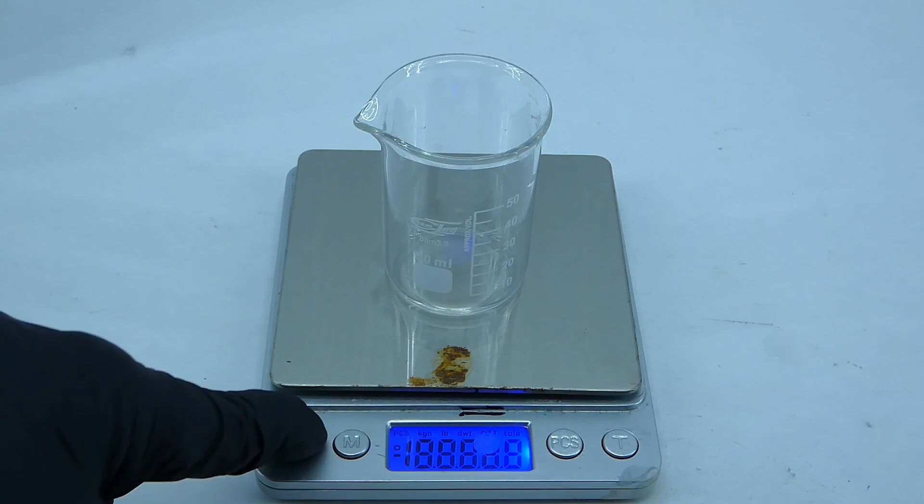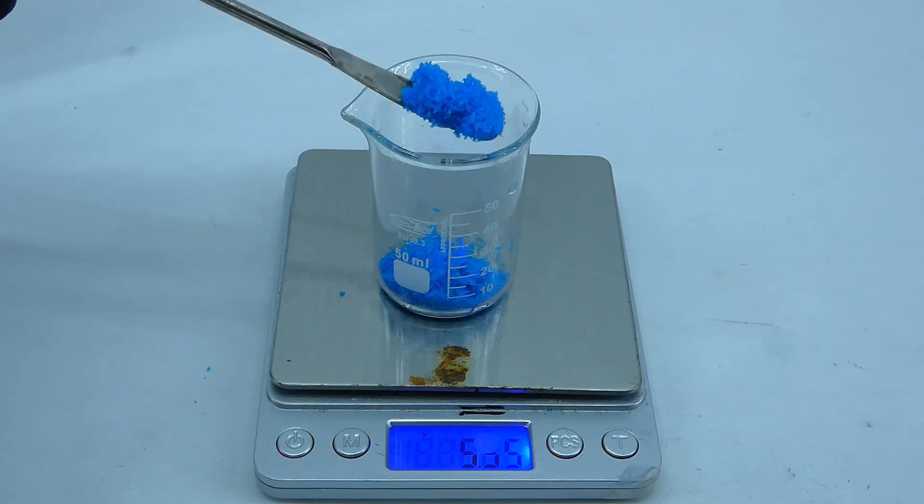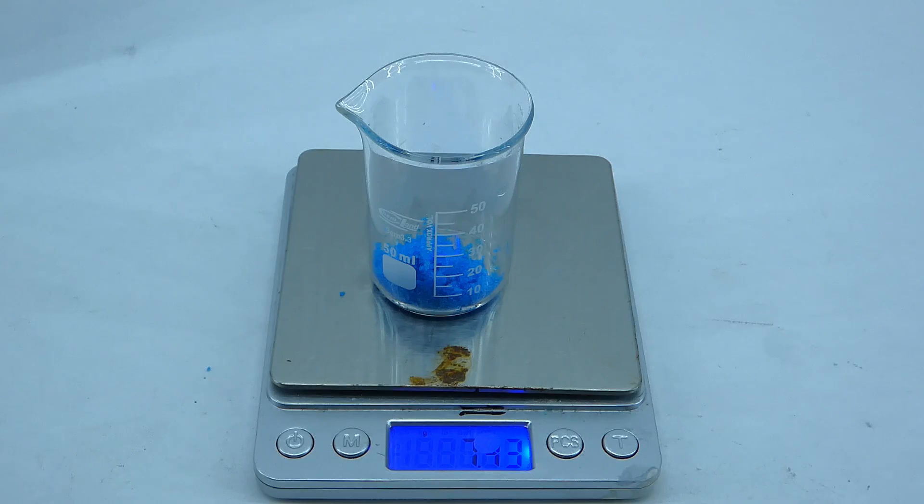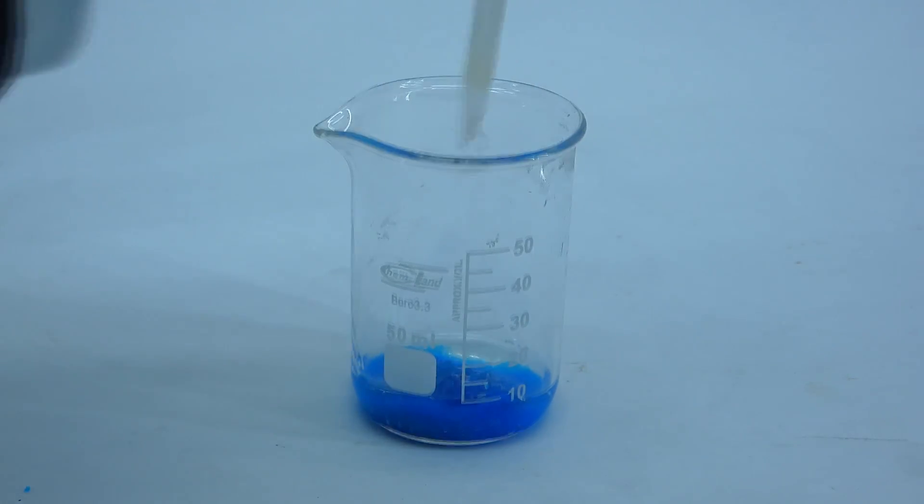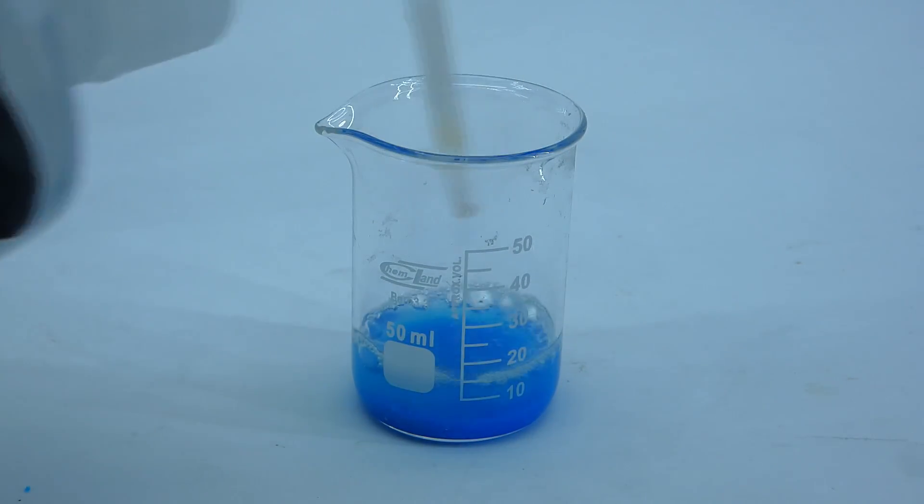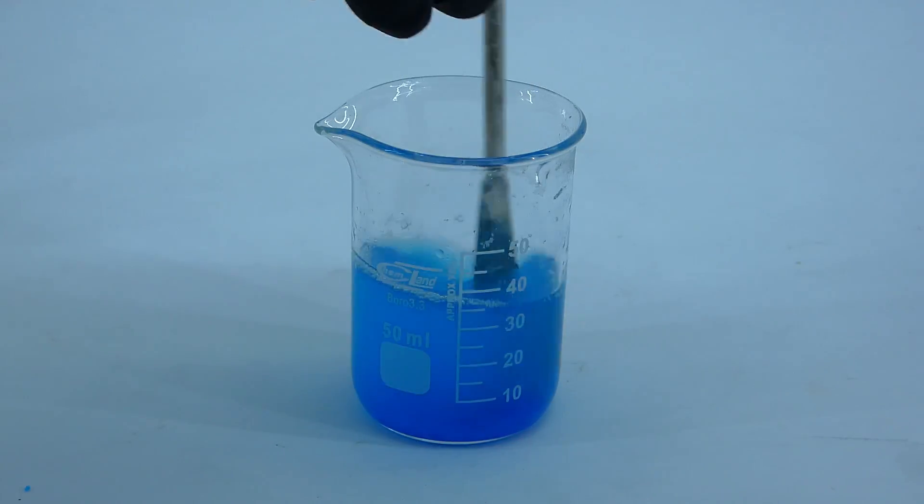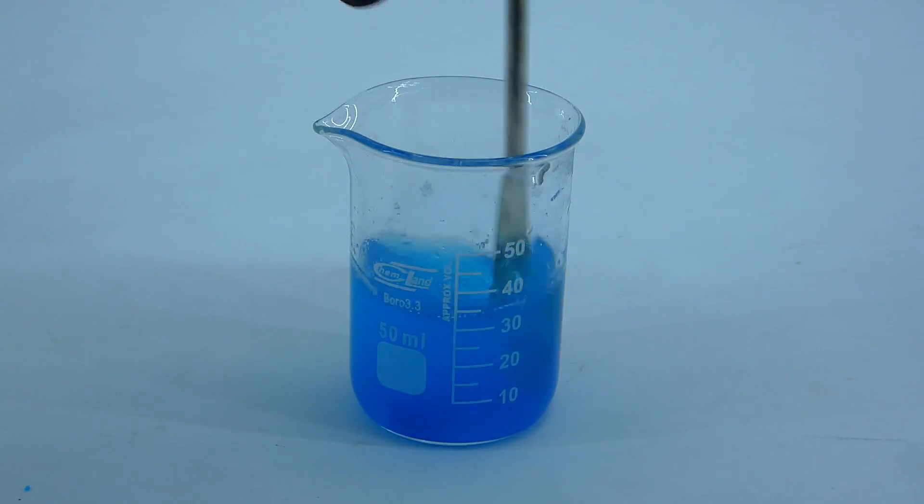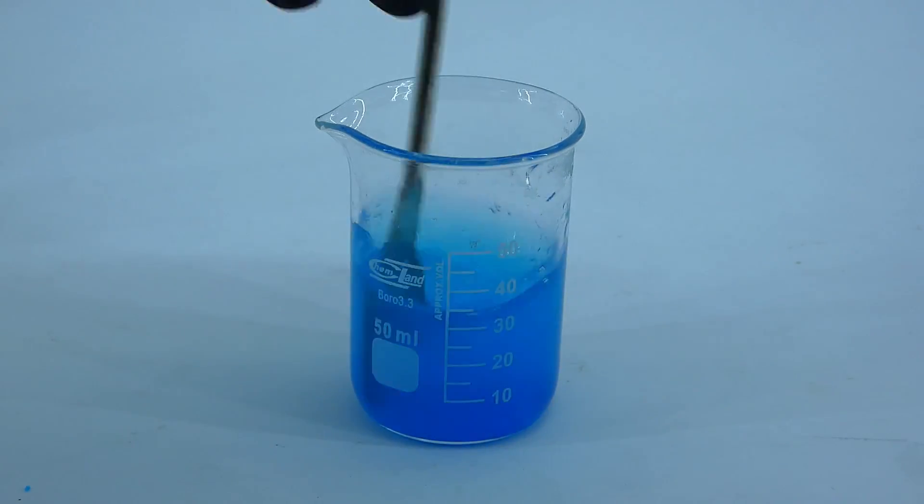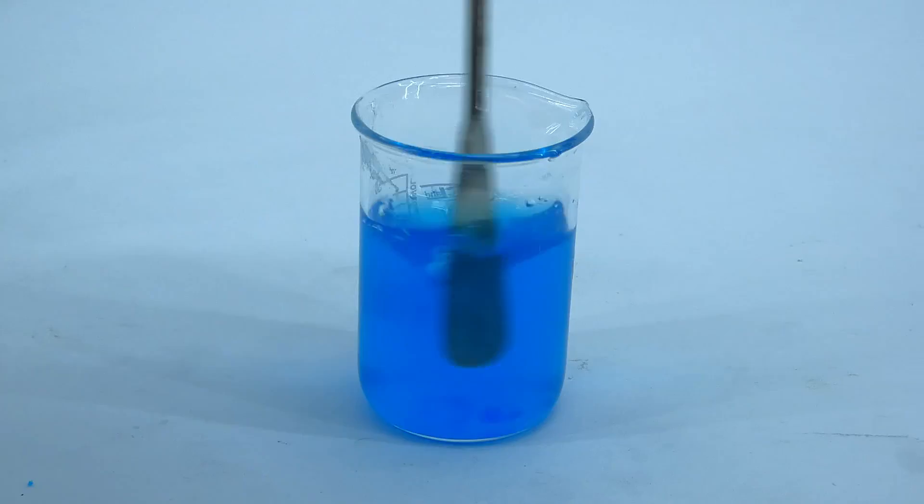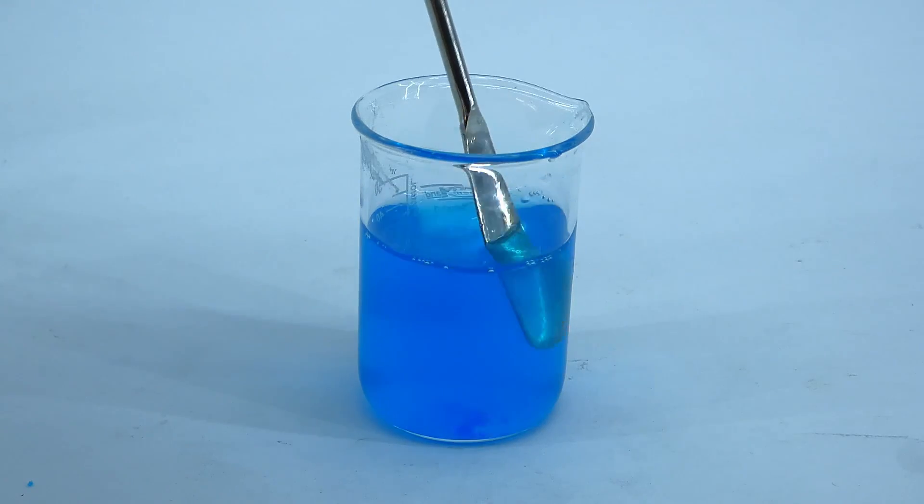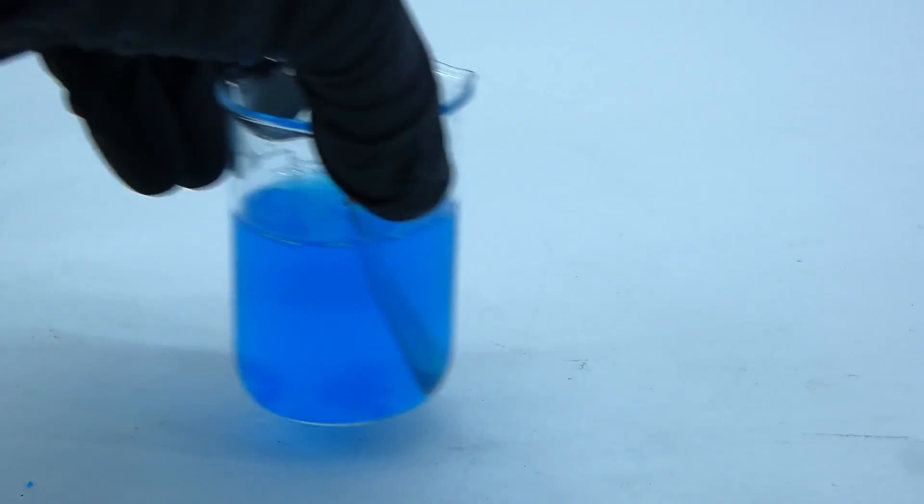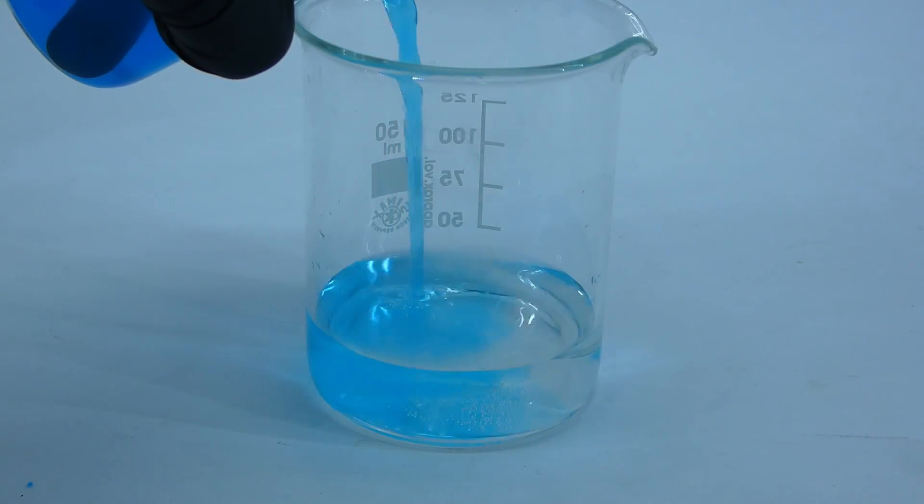I weighed out 7.2 grams of copper sulfate pentahydrate in a small beaker, and added about 30 ml of distilled water to dissolve it, which turned out to be harder than expected, but after 10 minutes of manually stirring this thing, I managed to finally dissolve most of the crystals, and now it was time to combine the solutions.